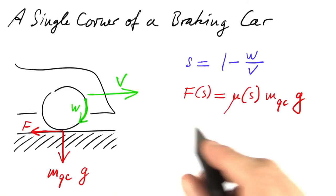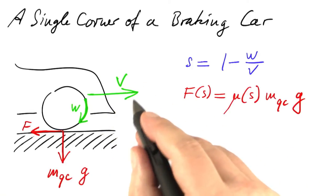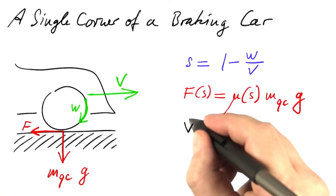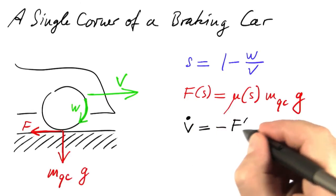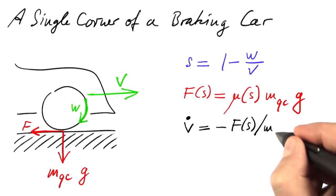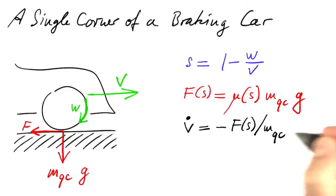And now it's time to look at the velocities. The car is decelerated. The rate of change of the velocity of the car minus the friction force divided by the mass of that quarter of the car. Think about Newton's law. Force equals mass times acceleration. The rate of change of the velocity is the acceleration. This is our force. This is our mass. And we have to take care that we are braking, decelerating.